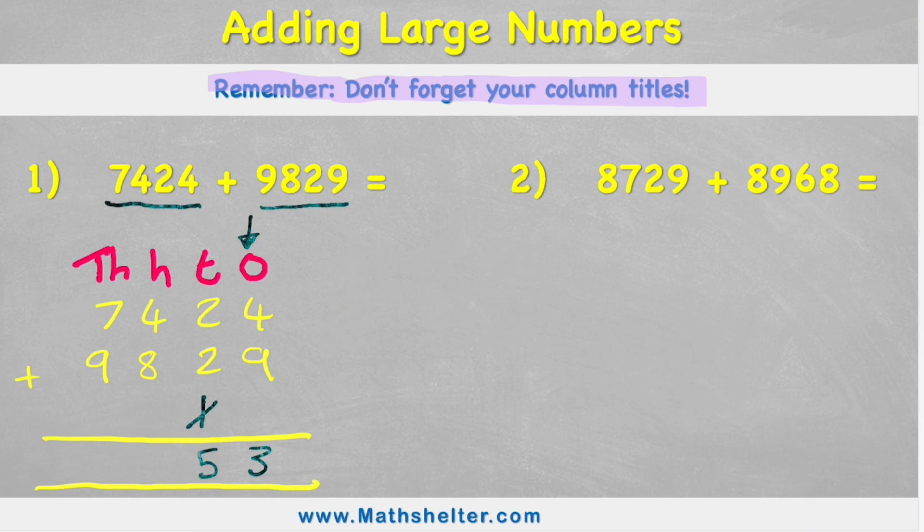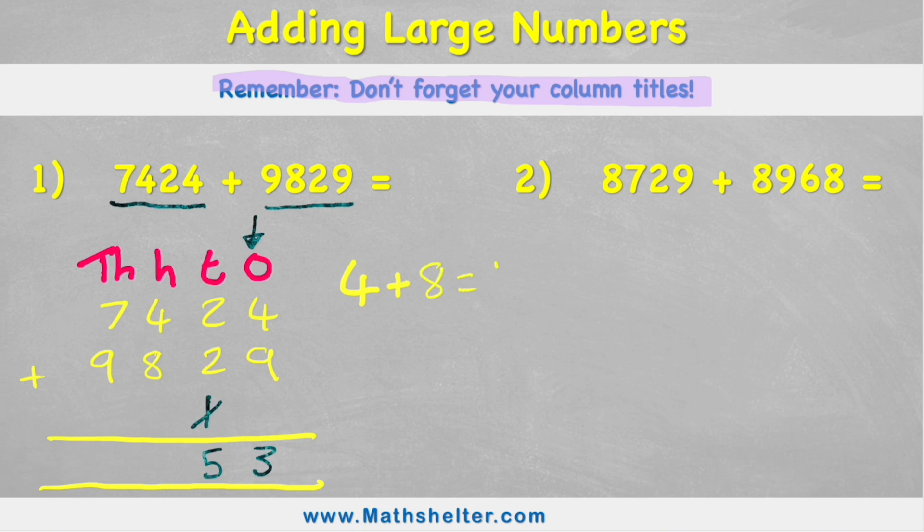Okay, in my hundreds column, I have 400 added to 800. And 4 plus 8 equals 12. So I have 1,200. Or in other words, my 1,200 would be 1,200. And with 1,200, I can see I have a 1,000 and a 200. So I can put my 200 in my answer row.